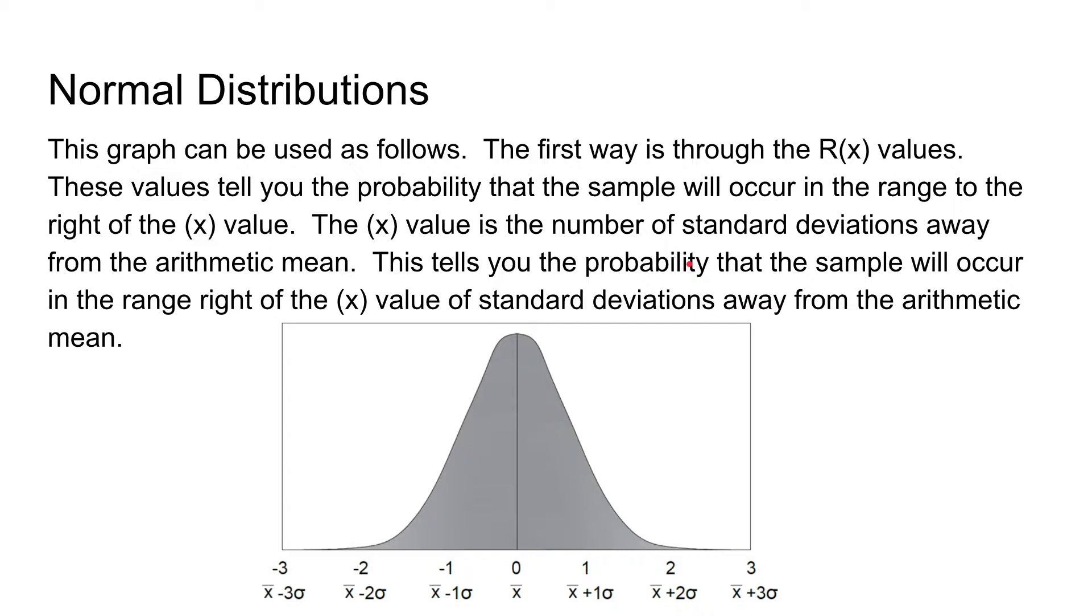So how is this graph used? So in the NCES FE reference handbook, you will see a normal distribution table. And on the left will be the x values. So those values will range from 0 all the way to 3. And once you choose which x value you want, then you can look towards the right of that table, and it will give you the lowercase f function values, the uppercase F function values, and then the uppercase R function values. And you need to understand what these values mean.